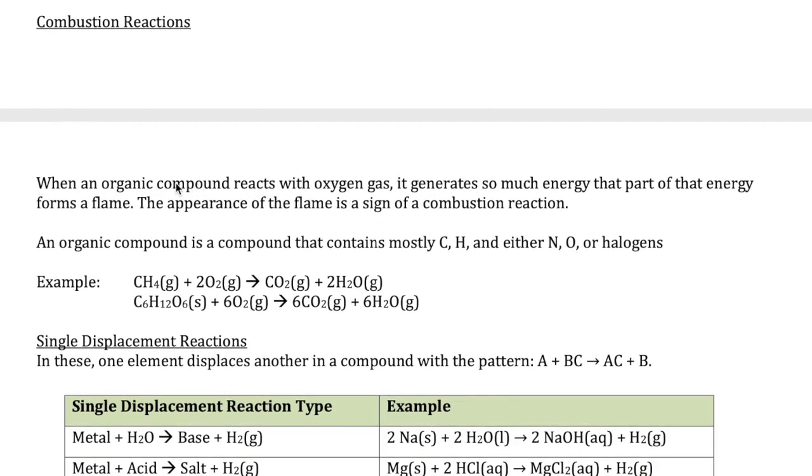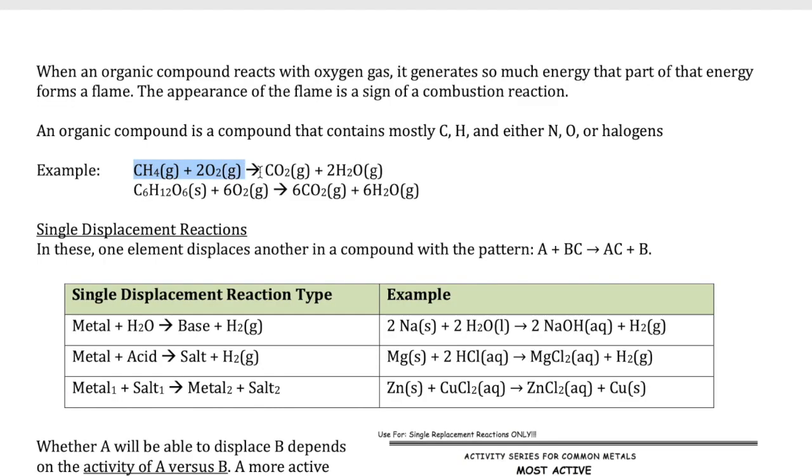Combustion. Remember that this is specifically defined as when an organic compound reacts with oxygen gas. So what's an organic compound? These are compounds where it contains mostly carbon and hydrogen. And then sometimes it might have one of these elements included: nitrogen, oxygen, or halogen. The reaction that I've written right here, CH4 plus 2O2 goes to CO2 and H2O, is an example of a combustion reaction because I have an organic compound right here, CH4. That's composed mostly of C and H, in this case with no other element. And then it reacts with oxygen.